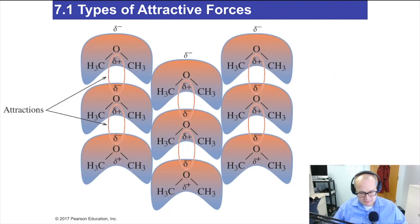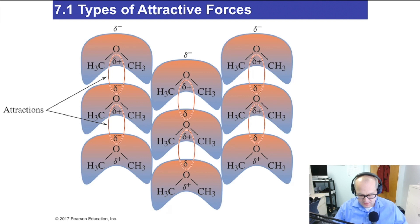Here's just a small illustration — here's an ether doing dipole-dipole interactions. Here's the delta negative oxygen, and the delta positive carbon area down here. So these carbons are delta positive, delta negative — just interacting with molecules that are just like it.